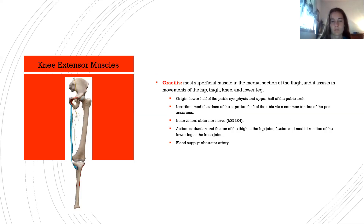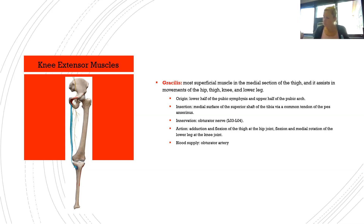The gracilis is the most superficial muscle of the medial thigh and assists in hip, thigh, knee, and lower leg movements. Origin: lower half of the pubic symphysis and upper half of the pubic arch. Insertion: medial surface of the superior shaft of the tibia via the common tendon of the pes anserinus. Innervation: obturator nerve L3–L4. Action: adduction and flexion of the thigh at the hip; flexion and medial rotation of the lower leg at the knee. Blood supply: obturator artery.